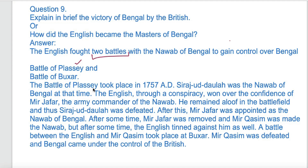First, Plassey was fought in 1757, when Sirajud-Dawla was the Nawab of Bengal. The English, through a conspiracy, won the confidence of Mir Jafar, who was the commander of the Nawab's forces. Mir Jafar remained aloof on the battlefield and Sirajud-Dawla was defeated. After this, Mir Jafar was appointed as the Nawab of Bengal.